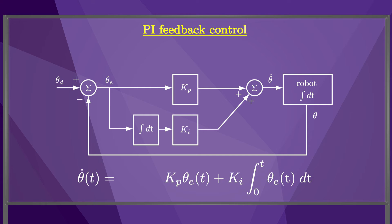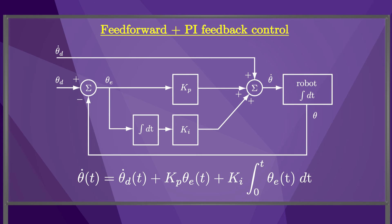One problem with this control law is that the robot never moves until there is an error to force it to move. Since we know the desired trajectory, we should be able to move the robot without waiting for error to accumulate.